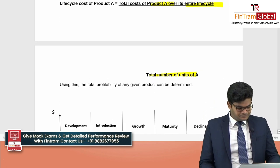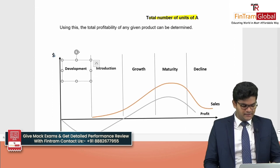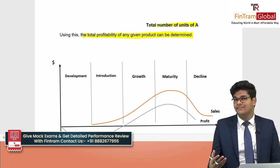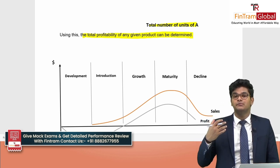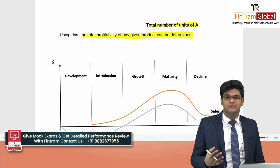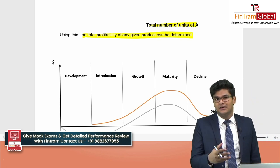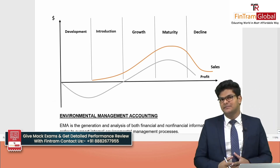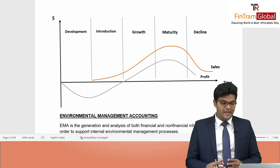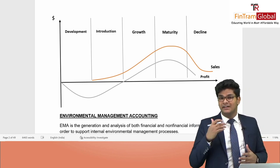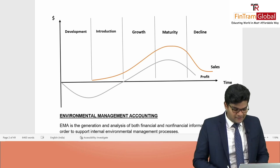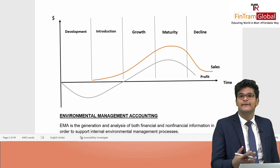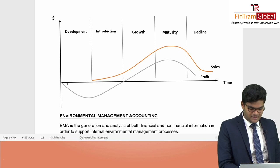Using life cycle costing, the total profitability of a given product can be determined, because we are looking at the entire life cycle. We can forecast to a certain extent whether a particular product will be profitable. Looking at the life cycle graph, we have five phases. The development phase involves R&D — during this phase, there is a lot of cost and no revenue, so we incur a loss.